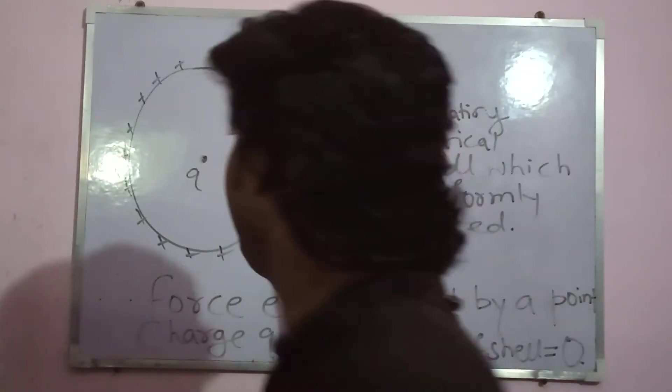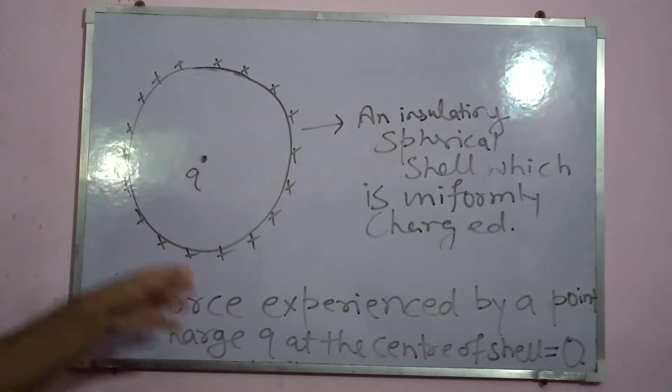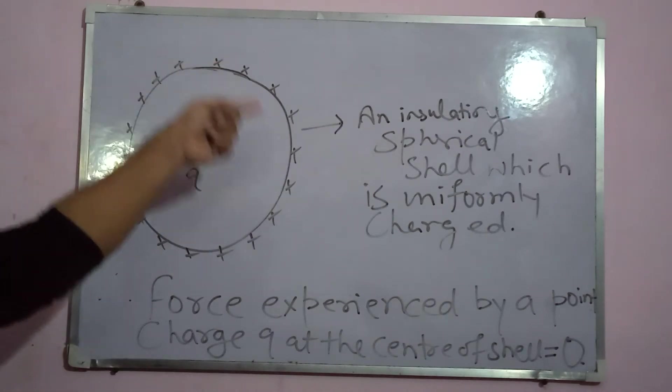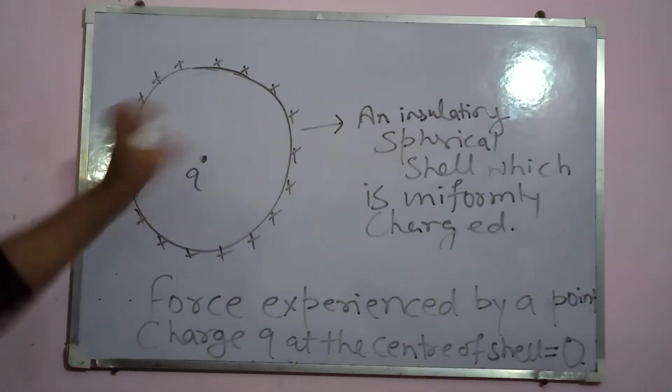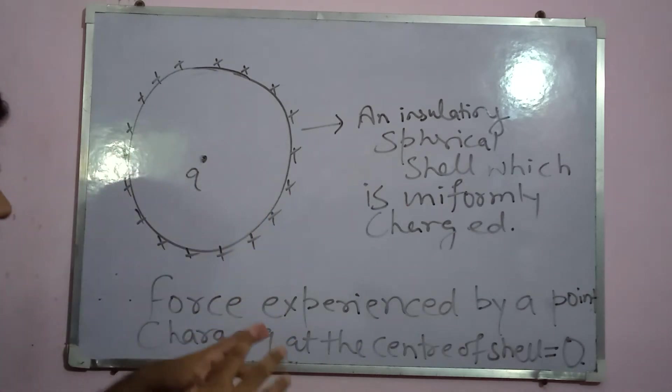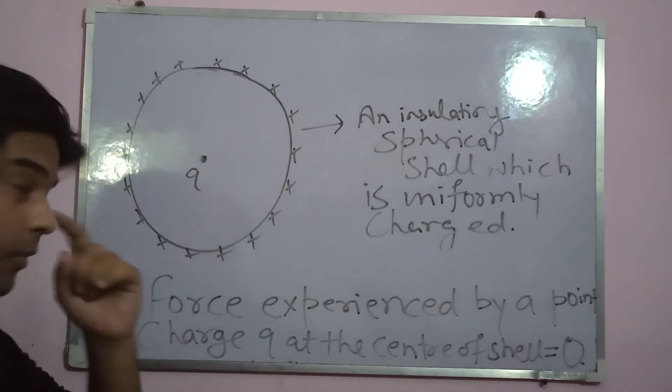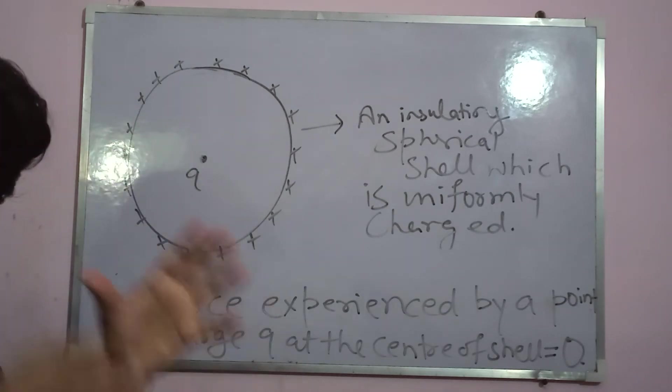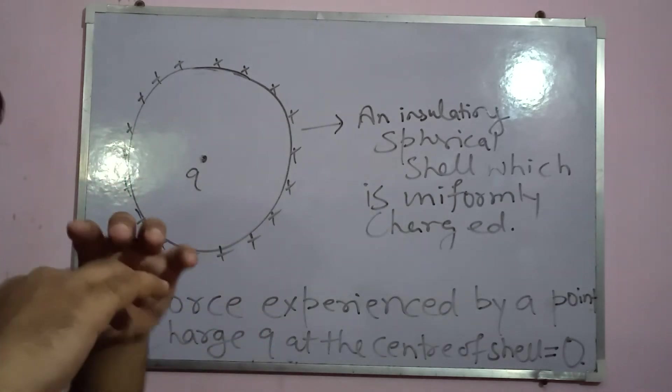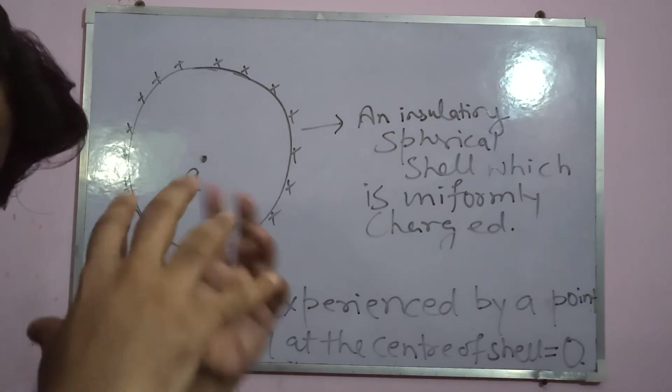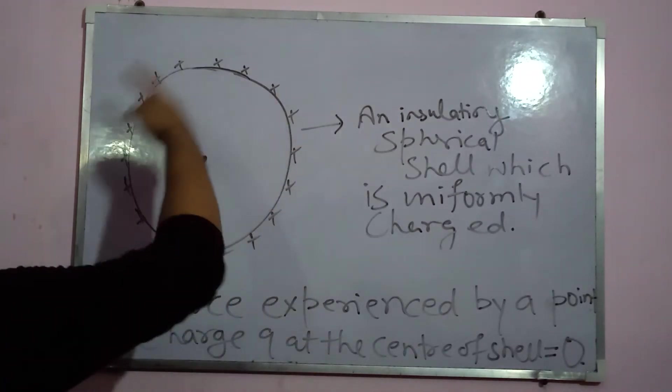Here, I made a new analysis based on the same continuous charge distribution. See, this time I have an insulating spherical shell which is uniformly charged. It's not a circular arc. It's an insulator which is in the form of a spherical shell which is uniformly charged.